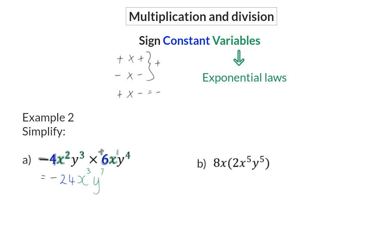Even though part B now has a bracket, it still implies multiplication. So we start with our sign, which is a plus times a plus, and that will give us a positive value. Next, we continue with the constant value, which is 8 times 2, and that will give us 16. Moving on to the variables, we have x to the power of 1 and x to the power of 5, and using the law, we will have x to the power of 6. There is only a y to the power of 5, so that will stay exactly the same.